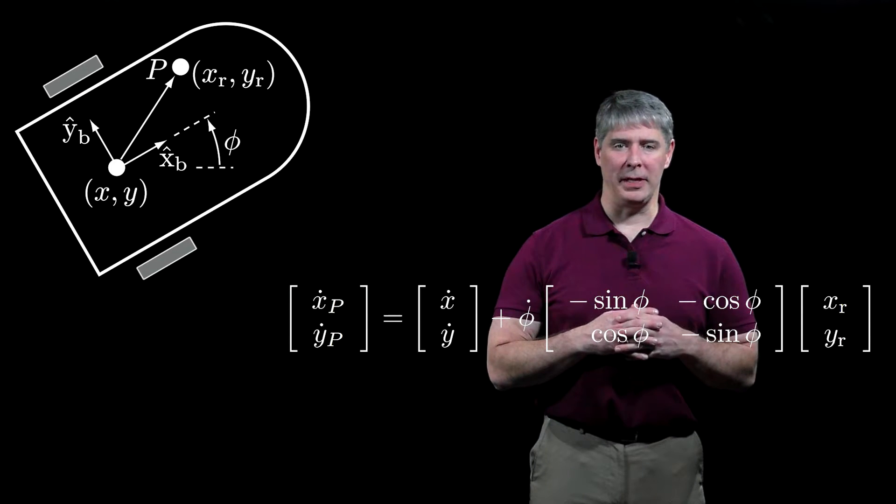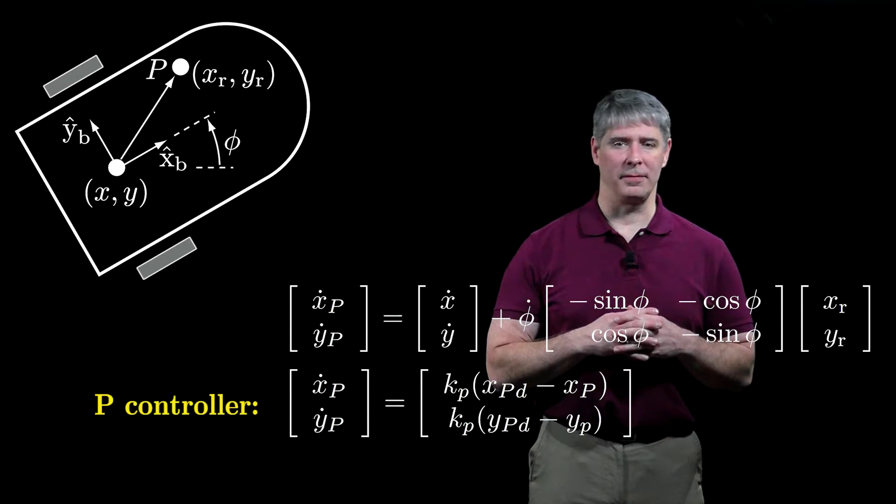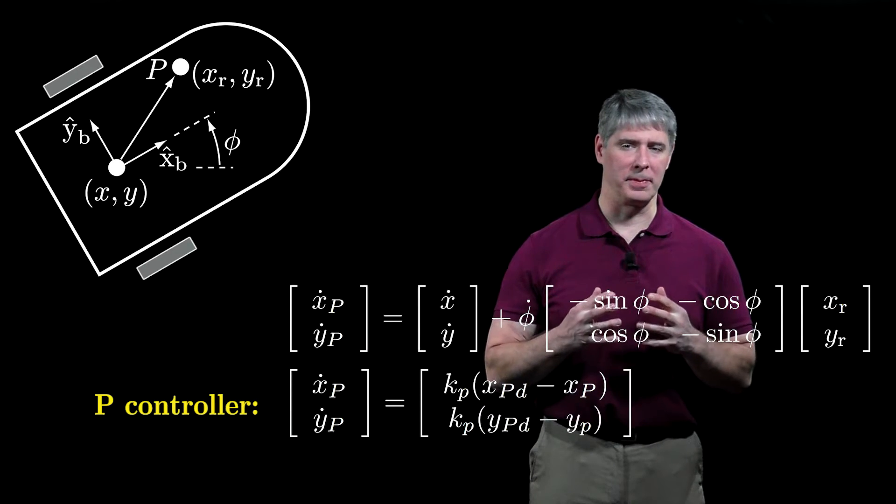To control the motion of the point P to follow a desired trajectory, we could use a proportional controller, which says that the velocity of the point is proportional to the position error.